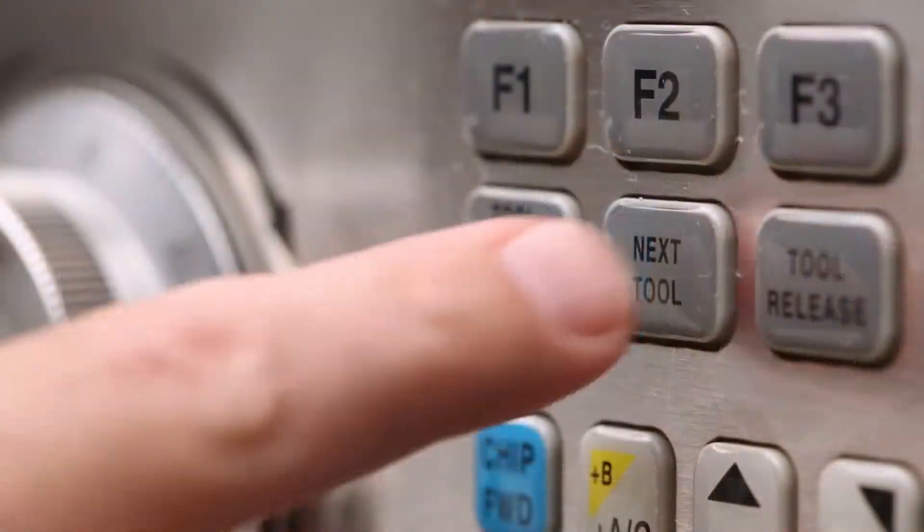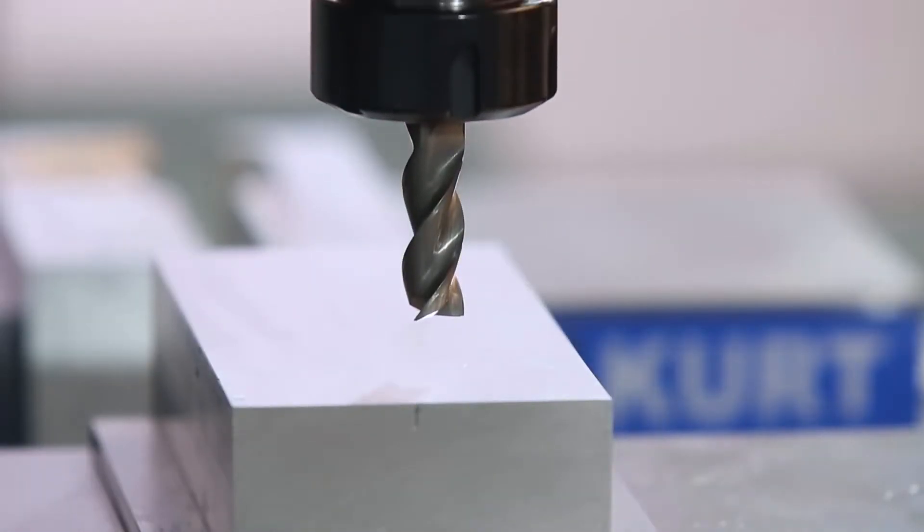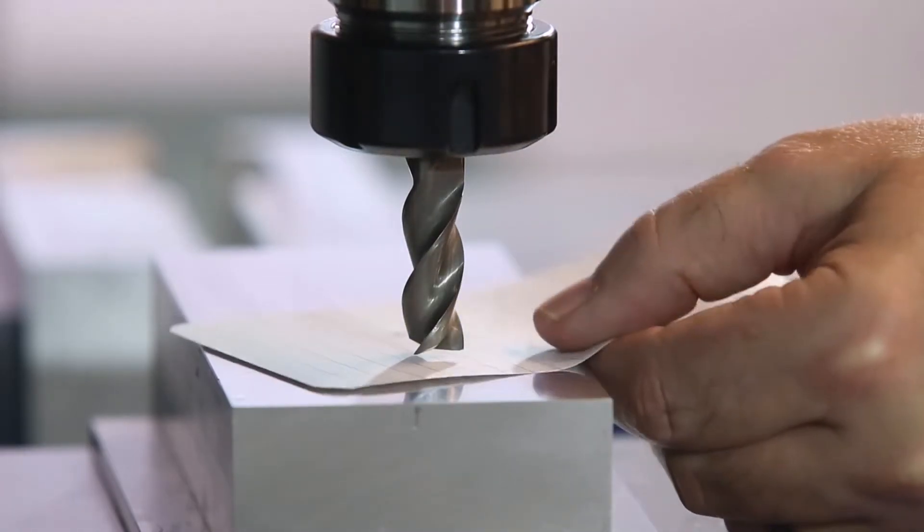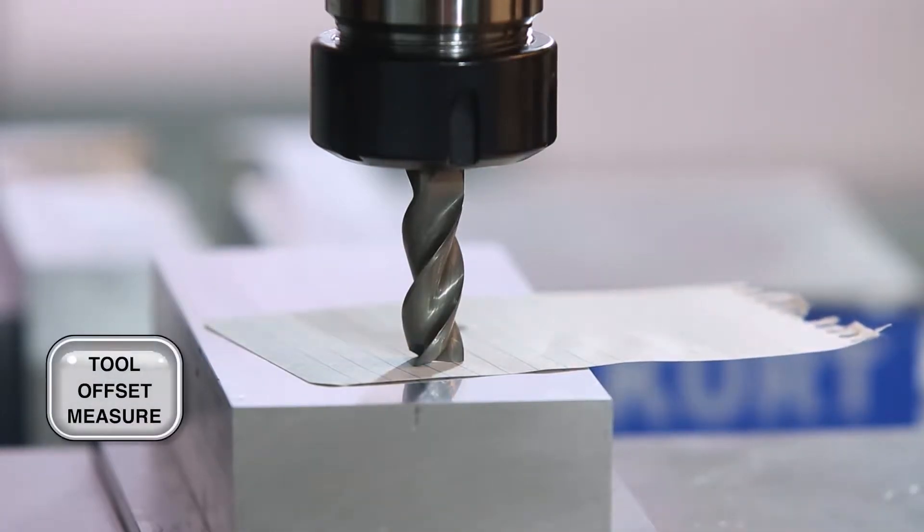Now, we've actually made a whole other video on how the next tool button works. So, if you haven't ran through the next tool function before, watch the next tool video. This is my second tool. It's a half-inch end mill. Again, jogging above the part. A little piece of paper. Once it pinches and it stops moving, I'm done. Tool offset measure. Next tool.